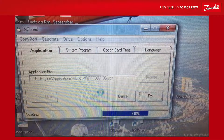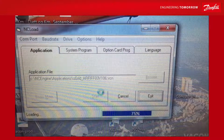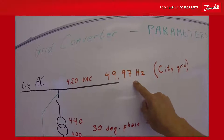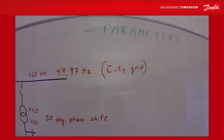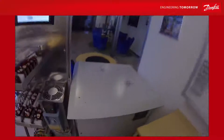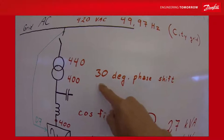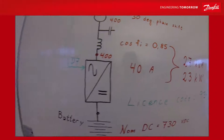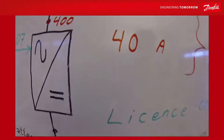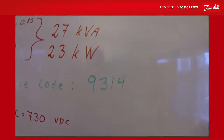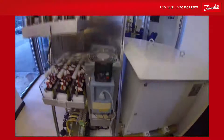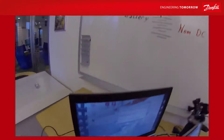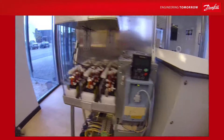While the application is loading up, we take a look at the nominal values of this grid. The local city grid is a 420 volt AC grid. The frequency is 49.97 — not 50 because there is some load drooping going on on the city grid here. The transformer has a ratio of 440 to 400 and a 30 degree phase shift. The power factor in the whole system is about 0.85, the drive is 40 ampere, the license code 9314 will only work with the serial number for this drive, and the battery in use has a nominal of about 730 volt DC.